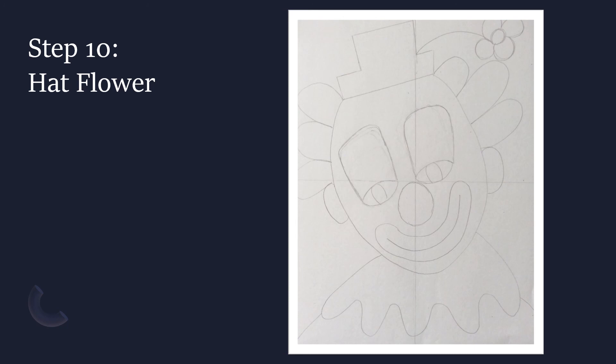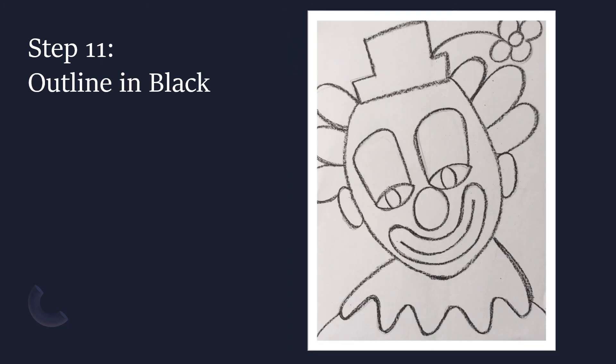Now that our drawing is done in pencil, go back with your eraser and erase those original quadrant lines — the four rectangles. Don't erase your clown, but if you see those lines anywhere in the open spaces, go ahead and erase those. Step eleven: to bring a clown to life, take your black crayon and trace over all the pencil lines that you drew your clown with.